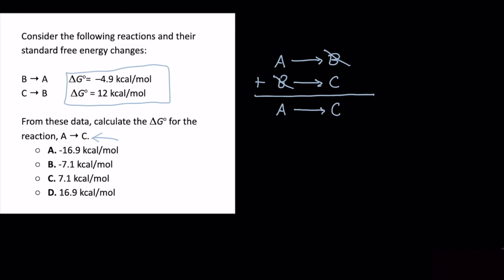So let's make a column with delta G naught and start writing in our values. Now we have to be careful with how we write in our values for this.